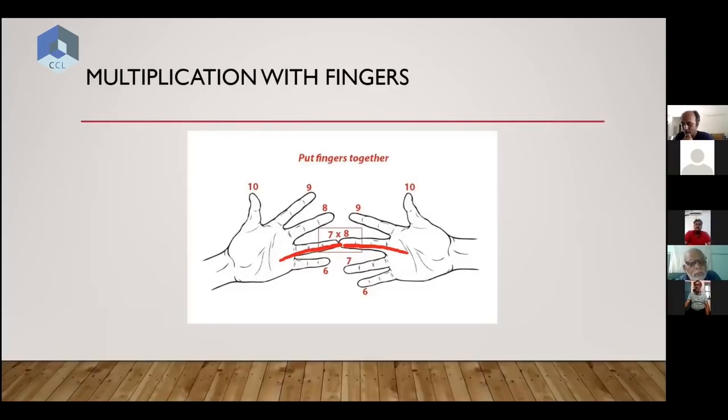Basically what you do is you touch any two fingers. You count the number of fingers on top - these three fingers on top, these two fingers on top. All right, these two fingers here and these three fingers here. Okay, the three fingers and two fingers we're going to multiply.